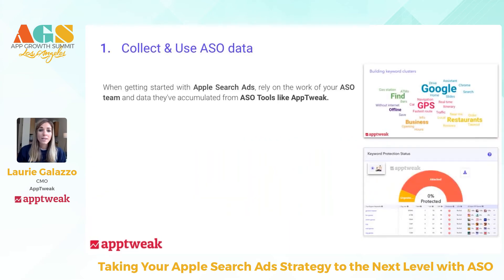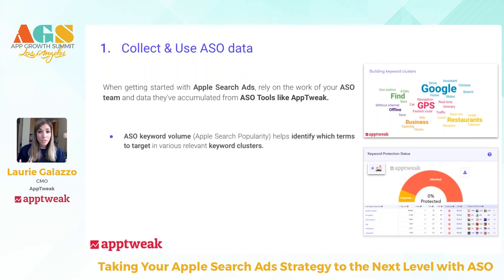The first tip when getting started with Apple Search Ads is to simply talk to your ASO teams — they may have already collected a lot of information to help you get started. You can check with them the keywords they've already researched for your organic campaigns and product page, looking at the keyword lists and clusters they've already built. You really want to rely heavily on Apple Search popularity, which tells you how popular a keyword is, and you want to run campaigns on keywords that are fairly popular.